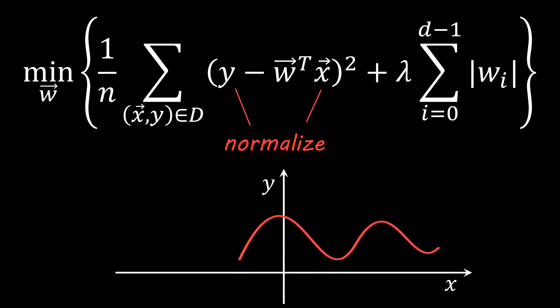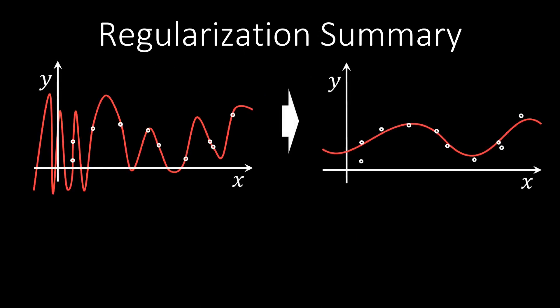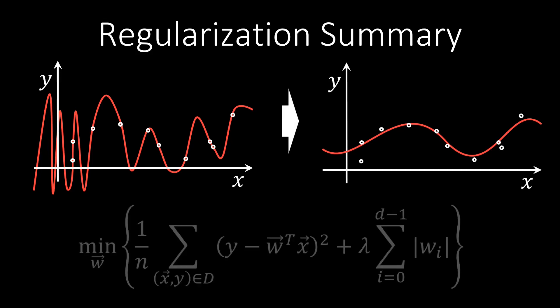Let us summarize the main insights of this video. Regularization is a method to tell our function approximator that it should prefer simpler solutions. To do so, we can add a penalty term to our objective function like here. This gives the model the capability to implicitly trade off the capacity as required. However, it adds a hyperparameter lambda, which we have to tune in an outer loop.